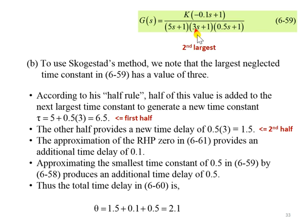In this example, we have 3 as the largest neglected time constant. We call it the largest neglected time constant because we are going to use the largest time constant.